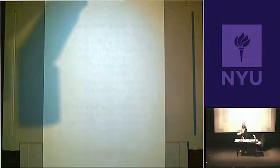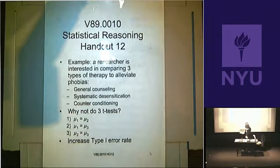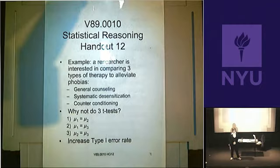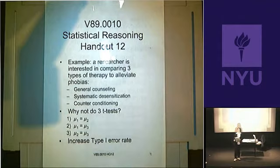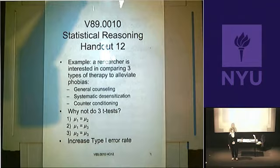Now we're up to Chapter 12. We know how to do tests with one group and have learned what we need to know about two groups. Now we're going to look at three or more groups — you could have a study with four, five, or ten groups.